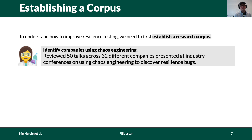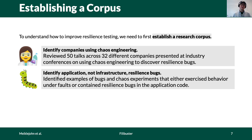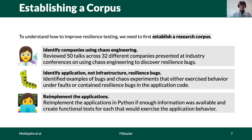To do this, we reviewed 50 talks across 32 different companies that were presented at industry conferences on using chaos engineering. We focused specifically on bugs that occurred in application code. We did not concern ourselves with infrastructure misconfigurations such as missing IAM policies or missing autoscaling rules. We took these applications and re-implemented them in Python to build our corpus, and this is what we'll see in our evaluation.